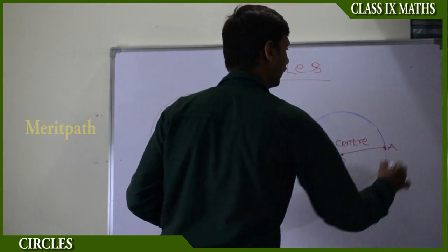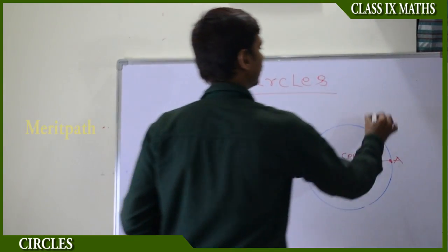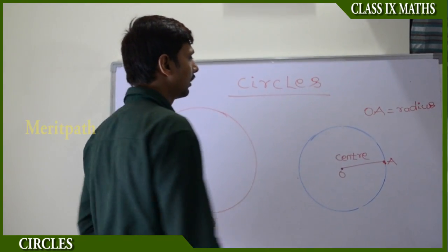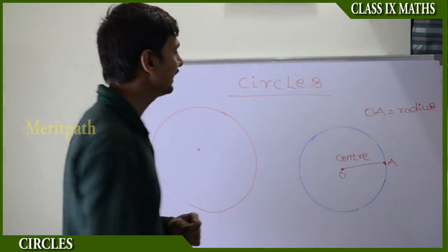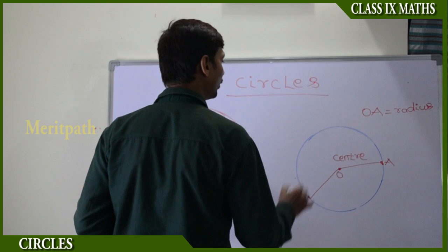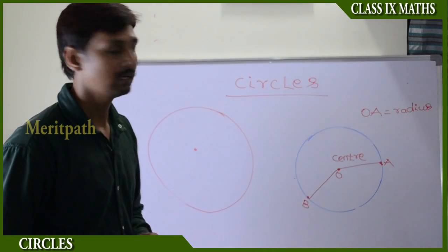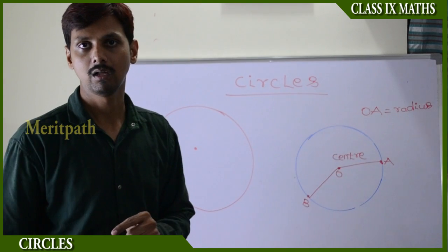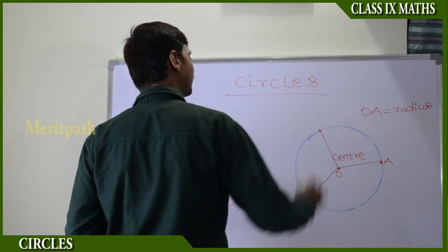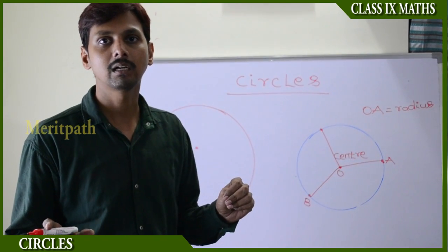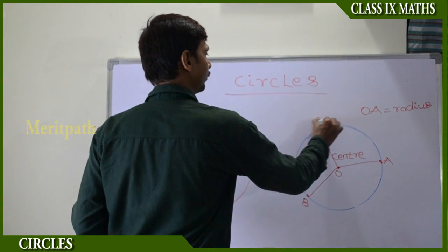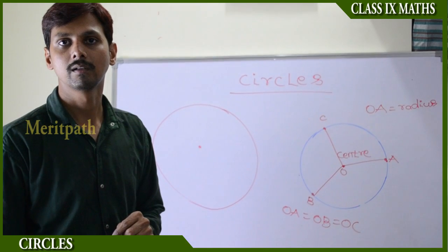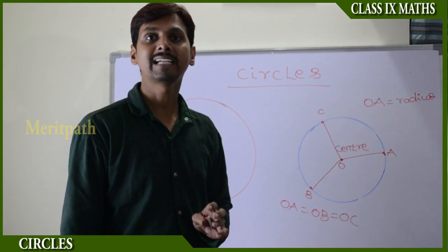Let us take the point OA. This OA is called the radius of the circle. From point O, if we take any other point on the circle, it is also equal to OA. Let us take point B — the measurement of OA and OB are equal. So from the center to any point on the circle is called the radius, and all radii are equal. OA is equal to OB is equal to OC. An infinite number of radii can be drawn for a circle.